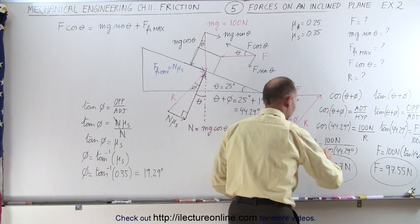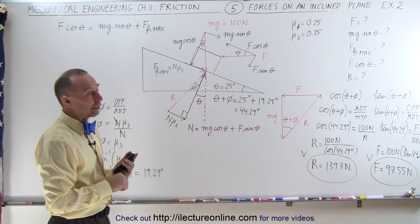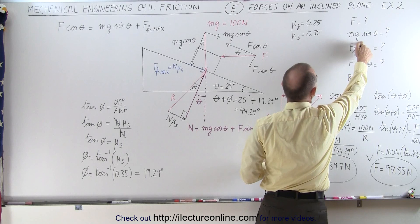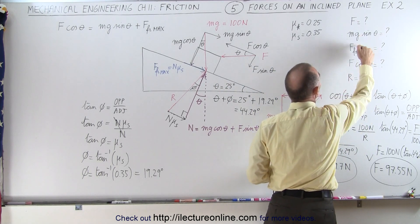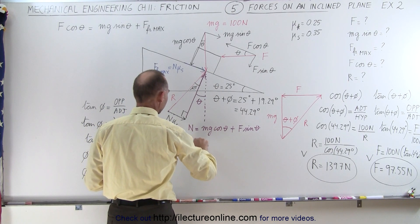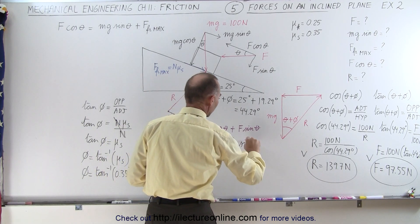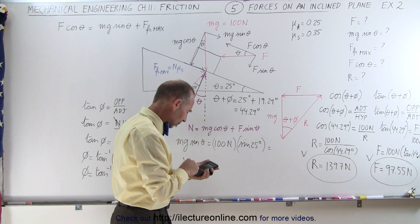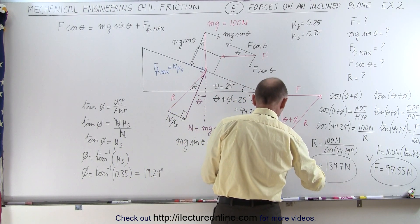We've found the reaction force and the applied force in a straightforward manner. Now, just to verify we did things correctly, let's calculate mg sine theta, the maximum friction force, and F cosine theta, and confirm that F cosine theta equals the sum of the other two. mg sine theta equals 100 newtons times the sine of 25 degrees, which equals 42.26 newtons.